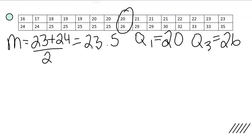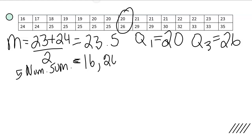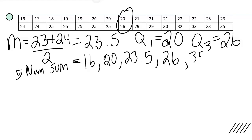Now we can determine our five-number summary. It equals: smallest data value is 16, Q1 is 20, Q2 (the median) is 23.5, Q3 is 26, and the maximum (largest number) is 35. So that's our five-number summary.